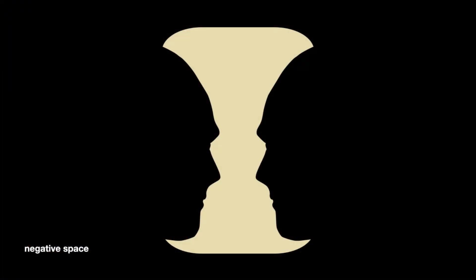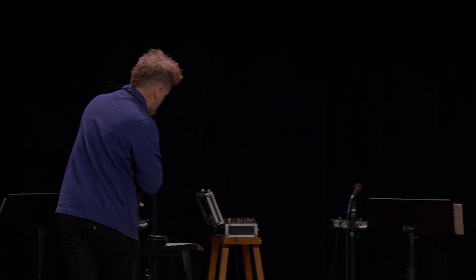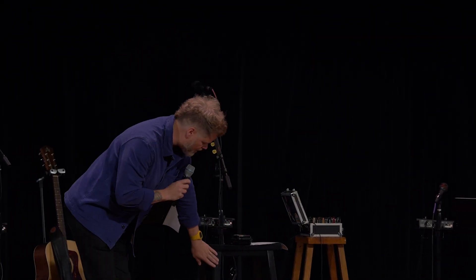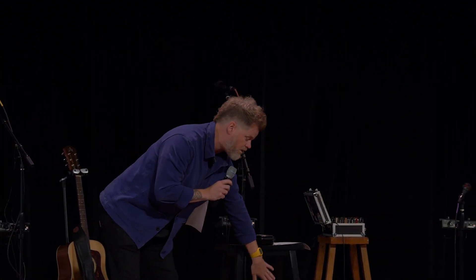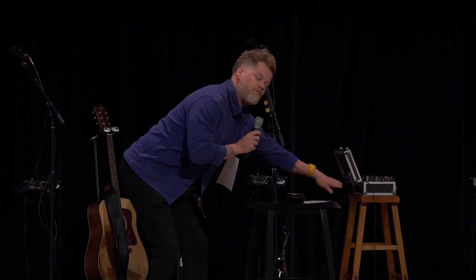Negative space is used a lot in art. If you look at different paintings and illustrations, often you'll have the main subject matter. But sometimes artists have focused on the space around the subject to reveal the thing itself. Like you could take this stool — you could say, I'm going to draw this stool. But you could also do a drawing of the stool by drawing the spaces that are around it.